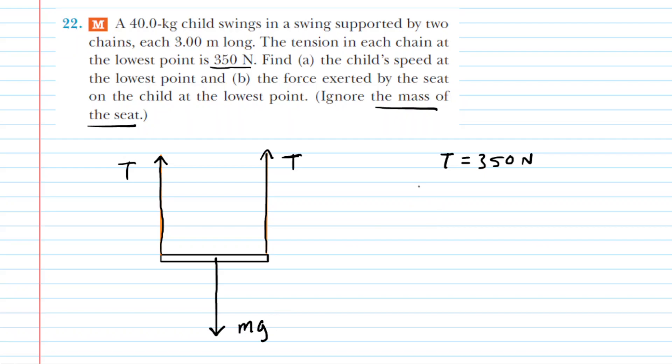Now, this swing is moving in a circular trajectory, so we know that because it's moving in a circle that the sum of the forces is going to equal the mass multiplied by the centripetal acceleration. It's basically a version of Newton's second law.